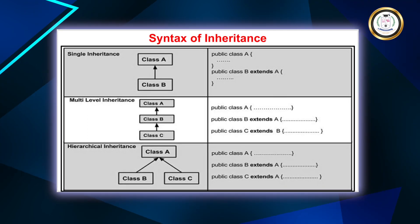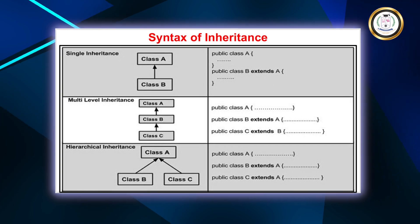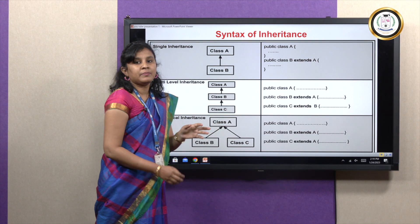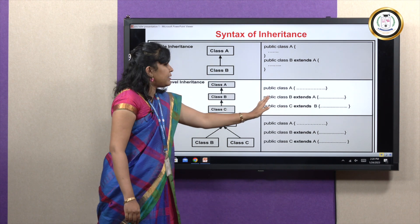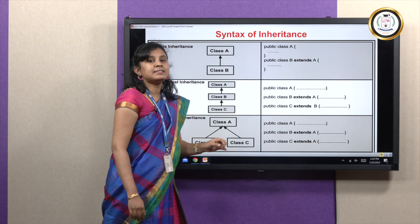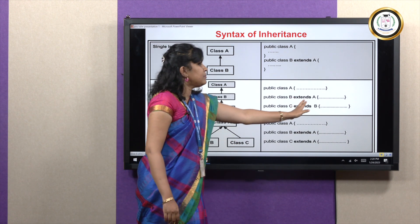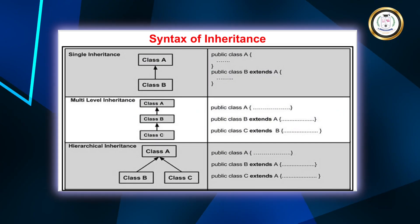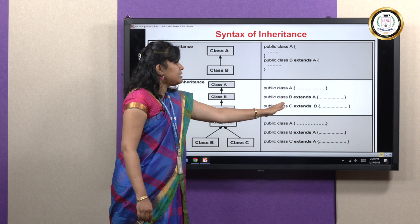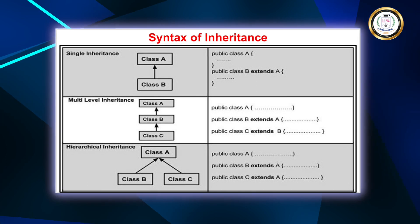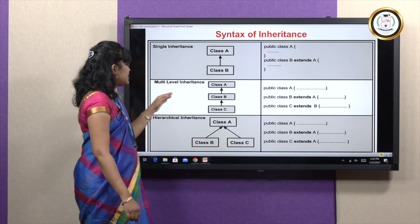For multi-level inheritance with three levels, the Superclass A is declared as public class A with its properties inside curly brackets. Class B is declared as public class B extends A — inheriting A's properties and having its own. The next level is public class C extends B. Since B already extends A, Class C will have the properties of A, B, as well as its own property. This is multi-level inheritance.